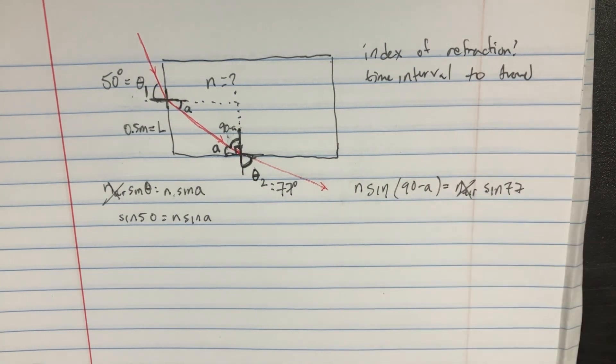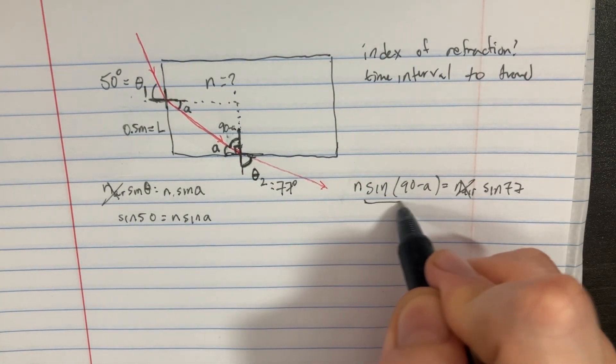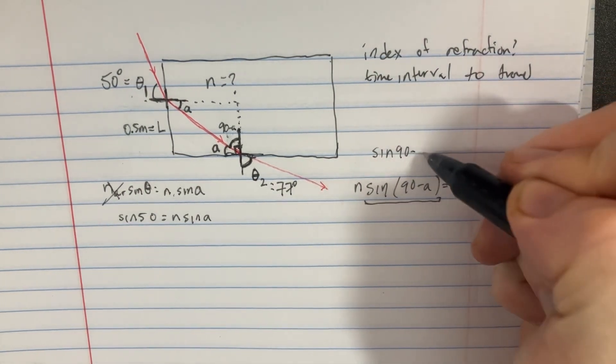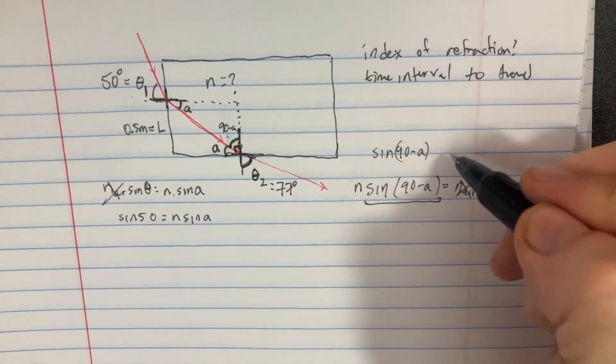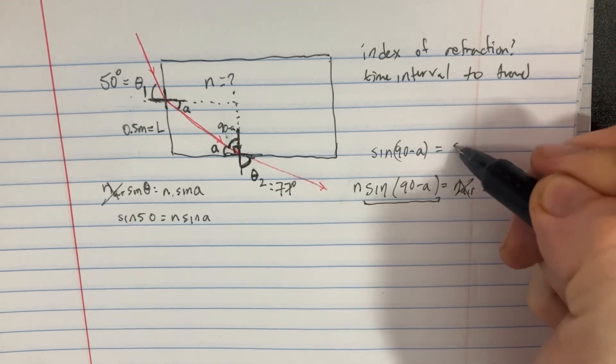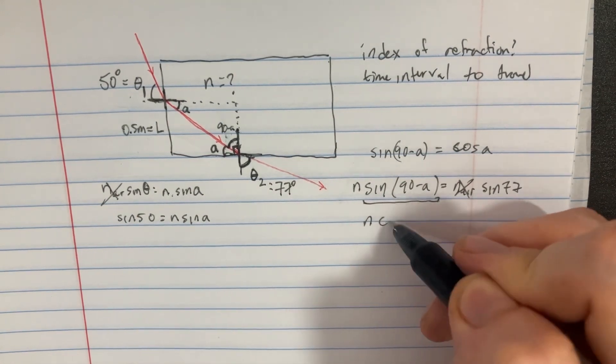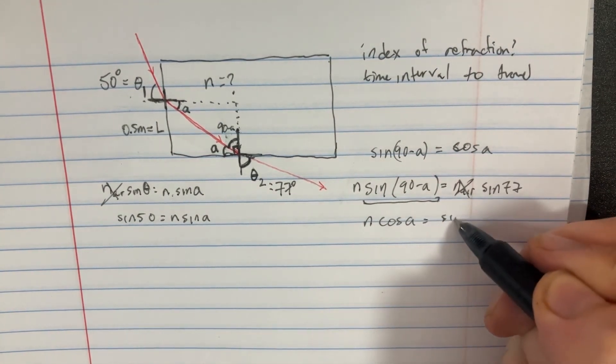This is just 1. We're close here. We were given this hint that sine of 90 minus some kind of angle would be equal to the cosine of that angle. So we could actually replace it in here and say n cosine of A equals the sine of 77.